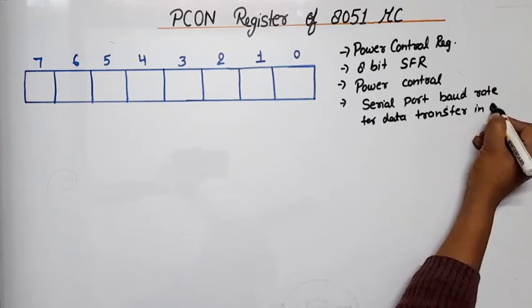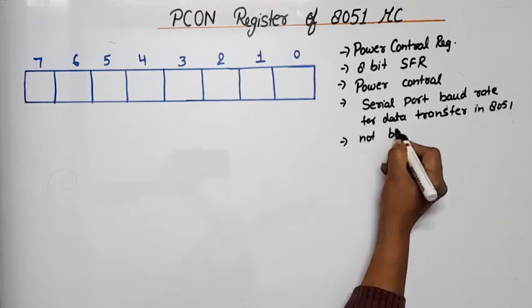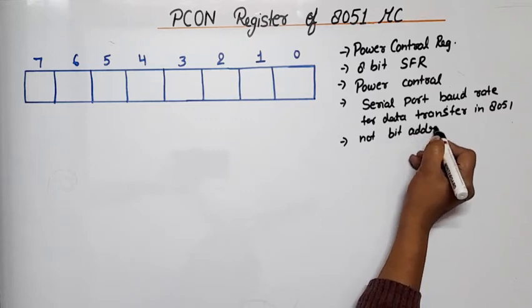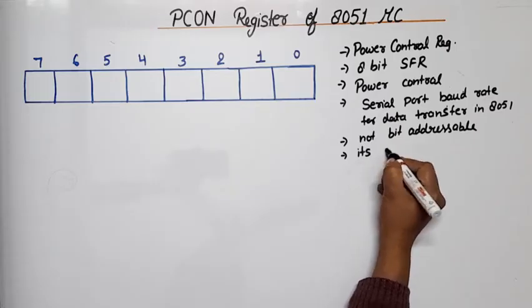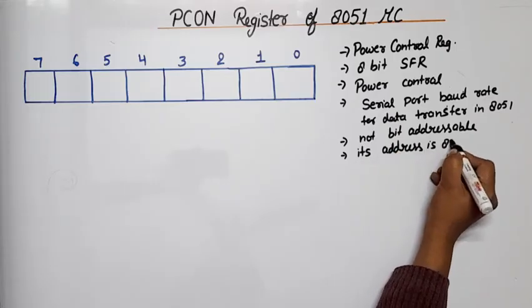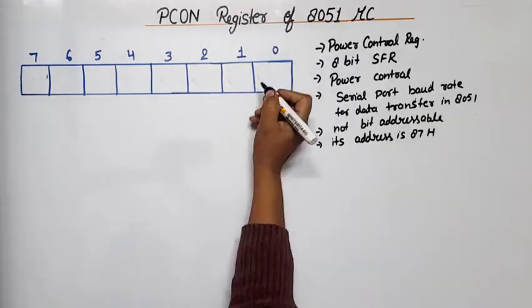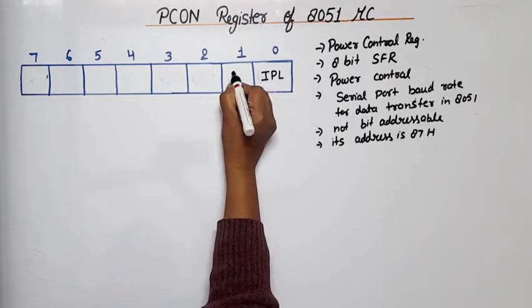And this is not bit addressable, means every bit cannot be assigned a separate address. Its address is 87H. Now let's see, first is IPL, second is PD, third is GF0, next is GF1, then dash dash dash, and last is SMOD.